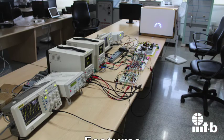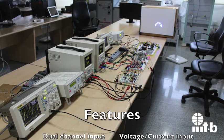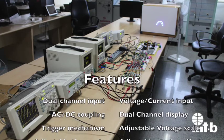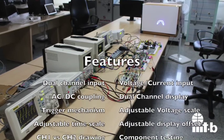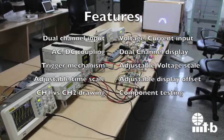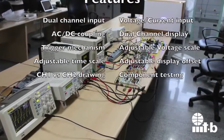The oscilloscope has dual-channel input. Each channel can take in a voltage or a current as an input. Both channels have AC-DC coupling, can be displayed simultaneously, and have adjustable voltage scale and offset. Channel 1 has a trigger mechanism to stabilize the signal.